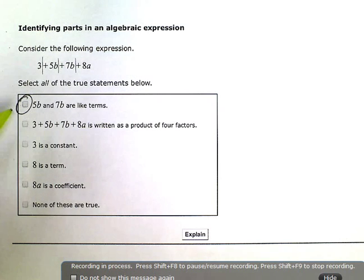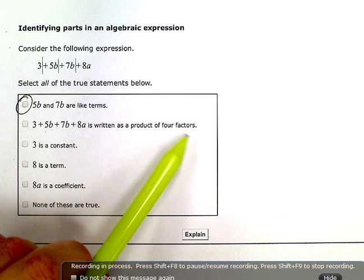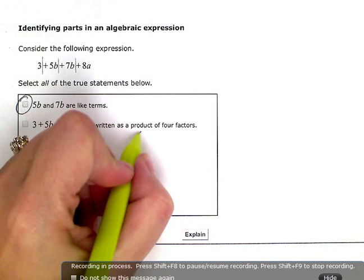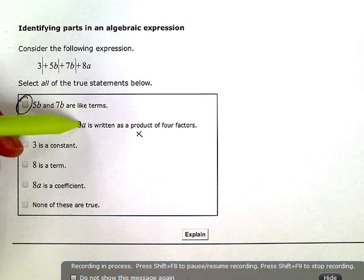Now it says 3 plus 5b plus 7b plus 8a is written as a product of four factors. Well, I know product means multiply.